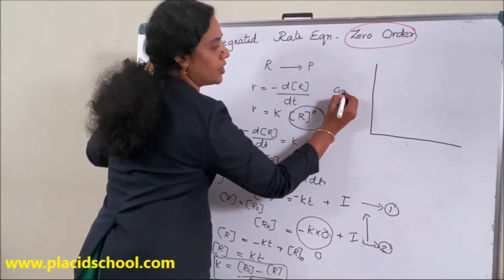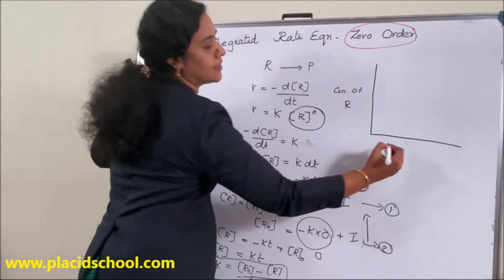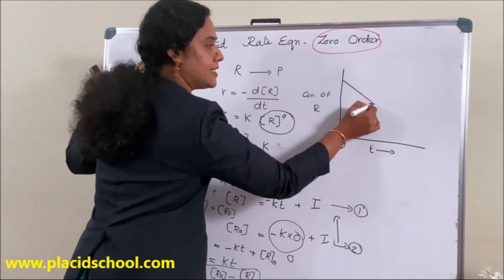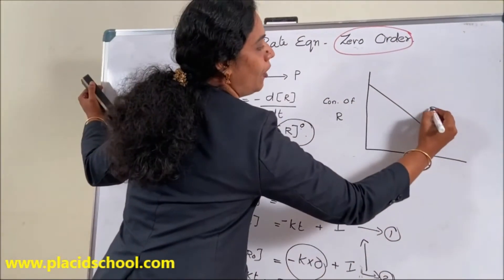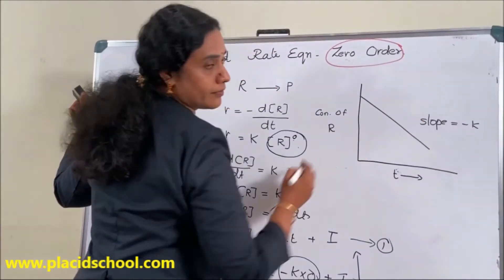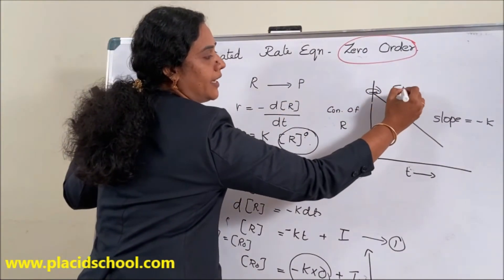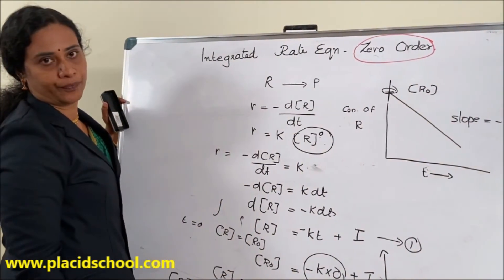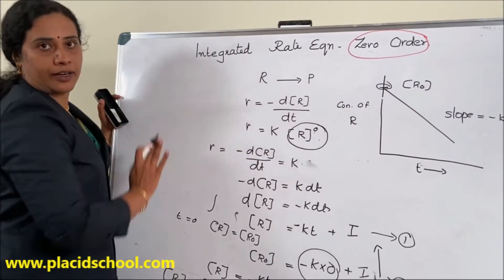So for a zero order reaction, the rate constant K equals the initial concentration of the reactant minus the final concentration of the reactant, divided by time t. If we plot a graph of concentration of reactant against time t, we get a straight line. The slope of that straight line indicates minus K.